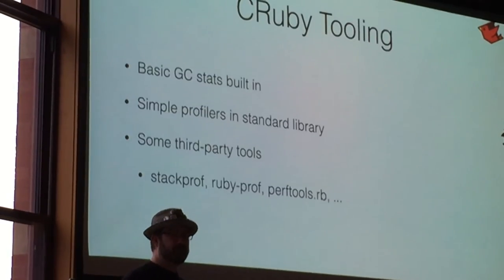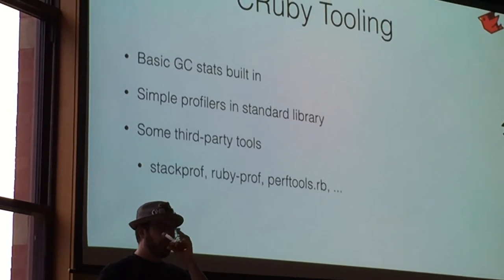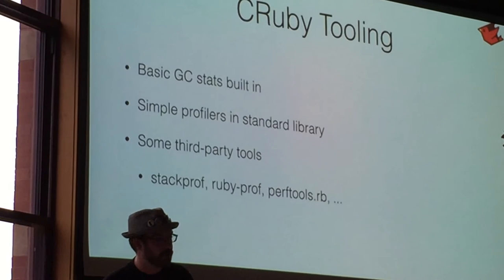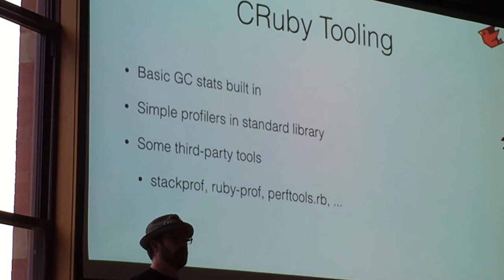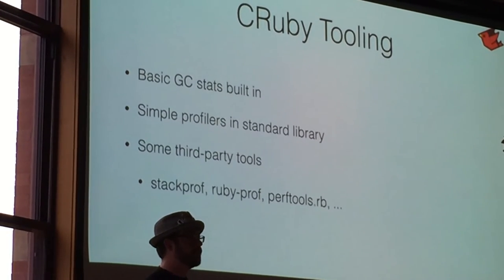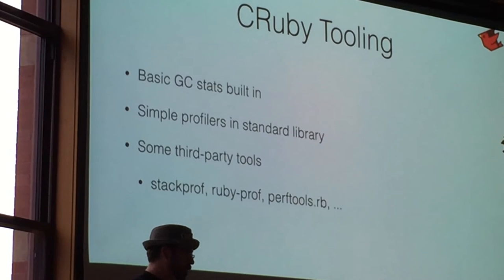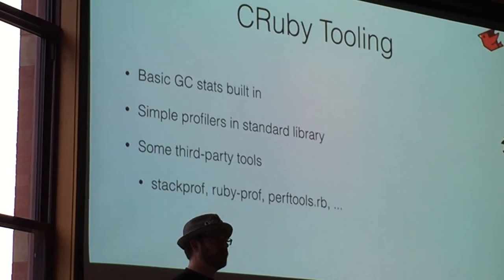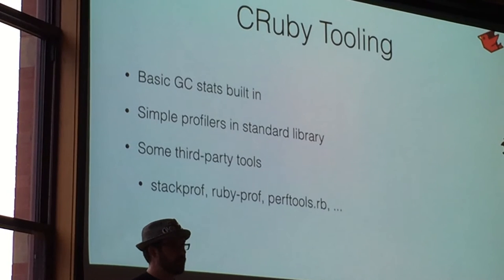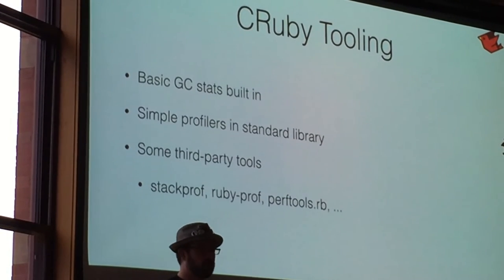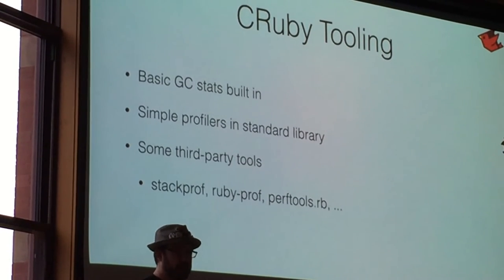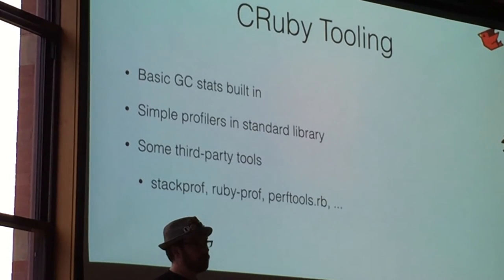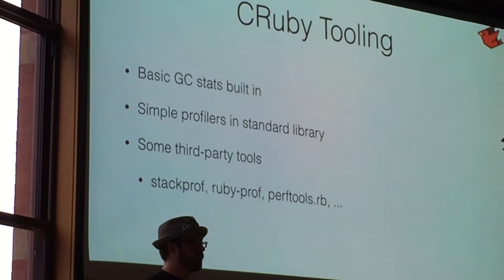So let's look at CRuby. There are some basic GC stats built into the runtime. You can pass a flag or execute a little bit of extra code around your app that will tell you how often it's running the garbage collector, how much time it's taking, how many objects it's clearing out, and so on. There are also some simple profilers built in. Most of these are pure Ruby based on set_trace_func — essentially hooks that are in the Ruby API. So they introduce a lot of their own overhead, but basic profiling works okay. And then there are a handful of third-party tools — stat_prof, ruby-prof, perf tools — that give you a little bit of visibility.